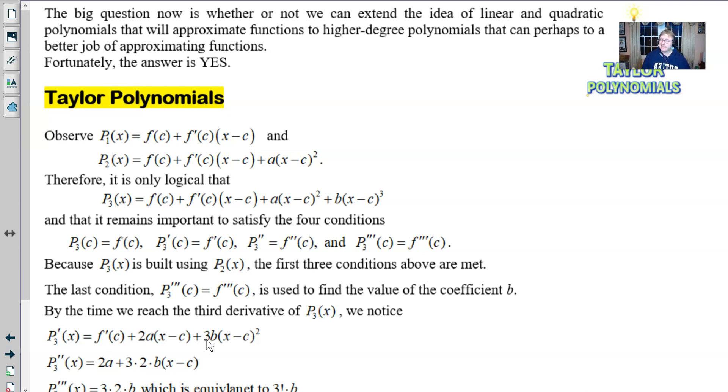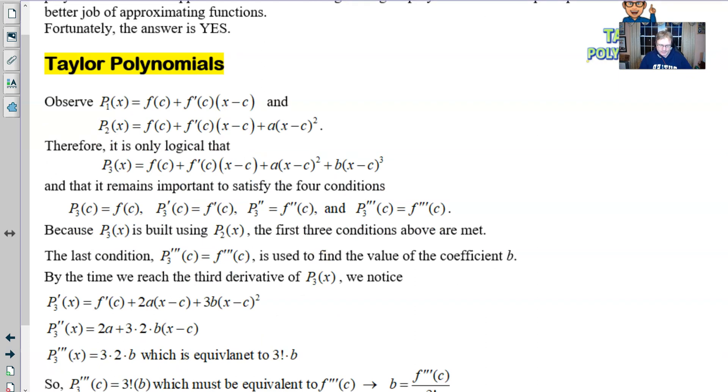But now the big question is, can we extend this idea and maybe find higher degree polynomials like third power, fourth power, fifth power? And the answer is a resounding yes. So I've got here on the screen, we remember that P1 and P2 had these two forms. So it's only logical then that P3, a third degree polynomial, would look something like this perhaps.